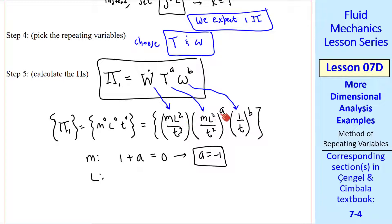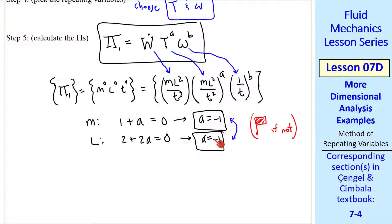For l, we have 2 and 2a. So 2 plus 2a equals 0, and a equal negative 1. Fortunately, these two match. It would be a red flag if they didn't. And either you did the algebra wrong, or you have something wrong with your dimensions, or you need another variable or something. If these did not agree, our mathematician friends would say that this is not a well-posed problem.